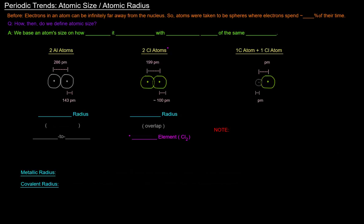So first up, as far as the periodic trends go, is atomic size or atomic radius, which is how we measure atomic size.